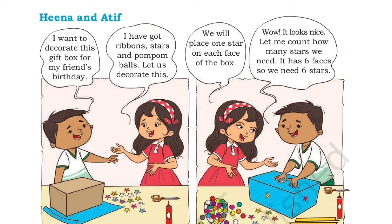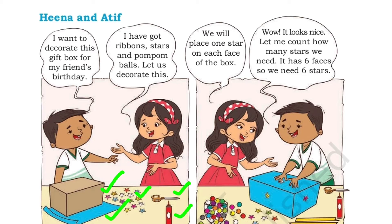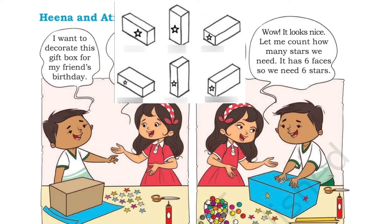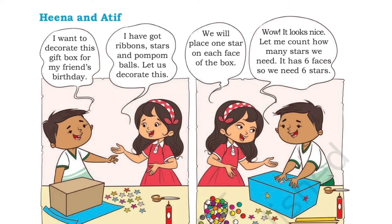Hena says: I have got ribbons, stars and pom-pom balls. Let us decorate it. They will place one star for each face of the box. We already know a box has six faces. So they are going to place each star on each face. Atif happily says: wow, it looks nice. Let me count how many stars we need — it has six faces, so we need six stars. A cuboid has six faces, so we need six stars for each side.